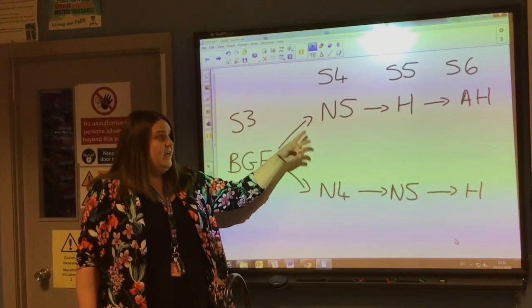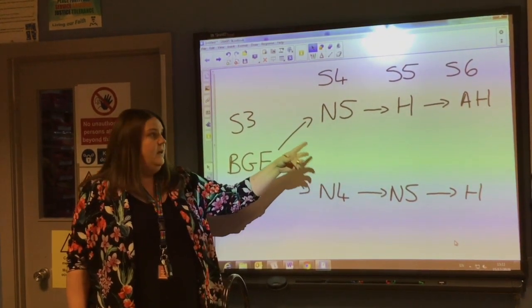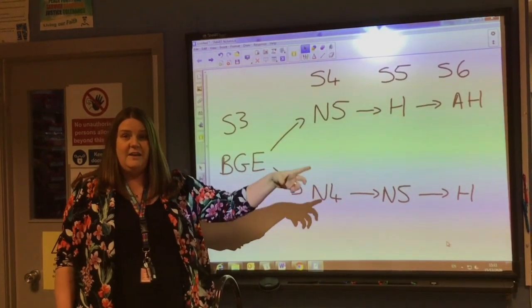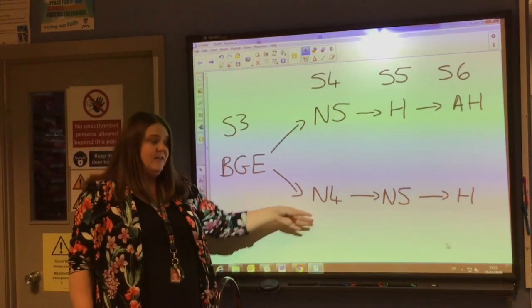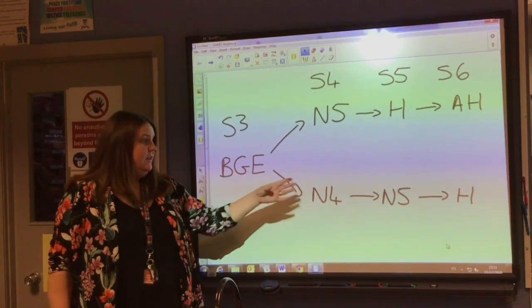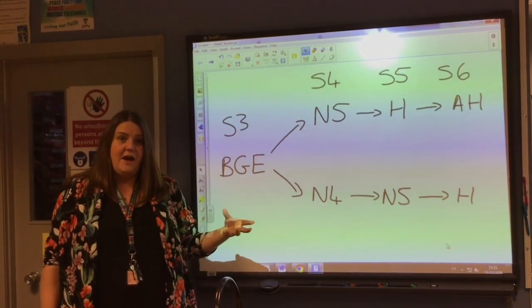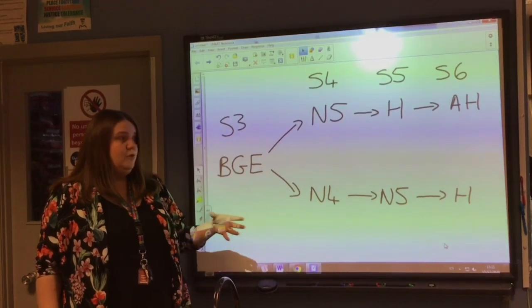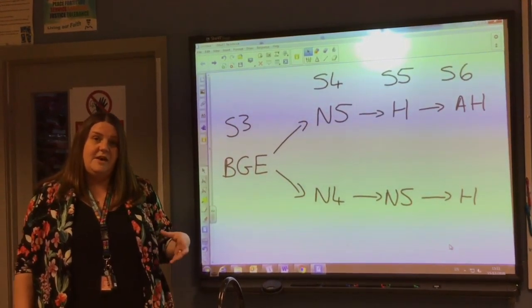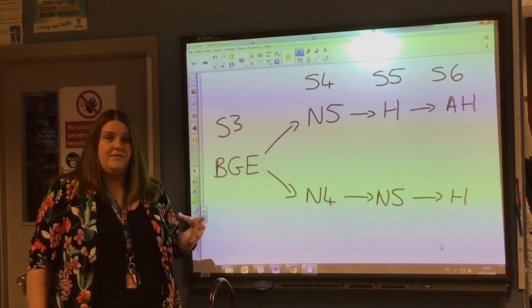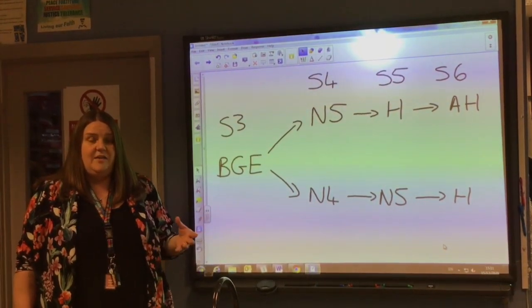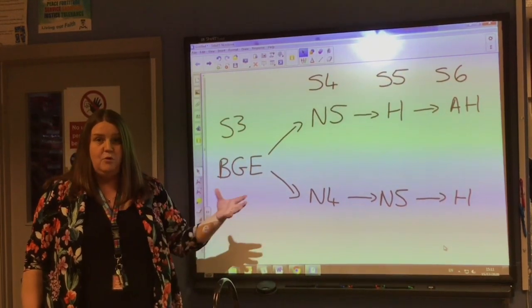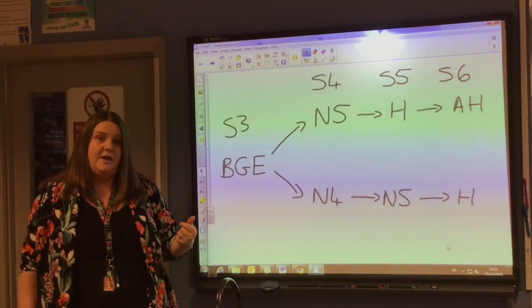Success in National 5 leads on to a Higher in S5, which can then lead on to an Advanced Higher in S6. A pass for National 4 can lead on to National 5 in S5 with the ability to move on to a Higher in S6. So both pathways can lead to a young person leaving at the end of S6 with a Higher, and if they wish, they can move on to the Advanced Higher in S6.